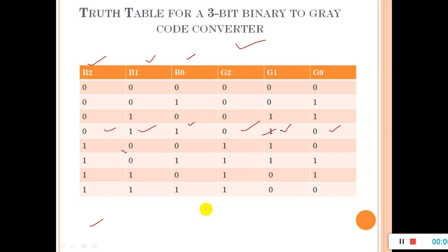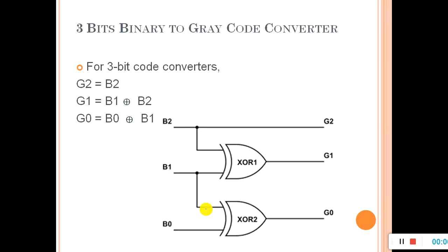The fourth step is to make the truth table, which we have done. The fifth step is the Boolean expression, and the sixth is the logic diagram. G2 is equal to B2. For G1, we have XOR of B1 and B2. For G0, we have XOR of B1 and B0. These are all XOR operations, and thus we have a three-bit binary to gray code converter. In the examination, you may be asked to design a two-bit, three-bit, or four-bit binary to gray code converter.